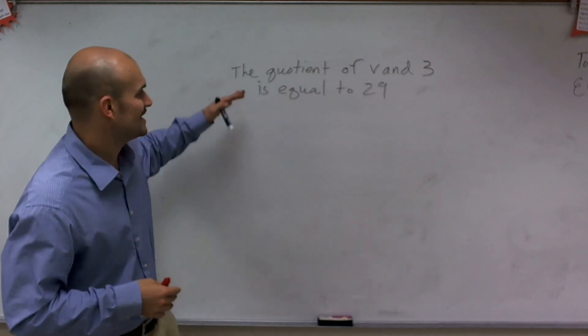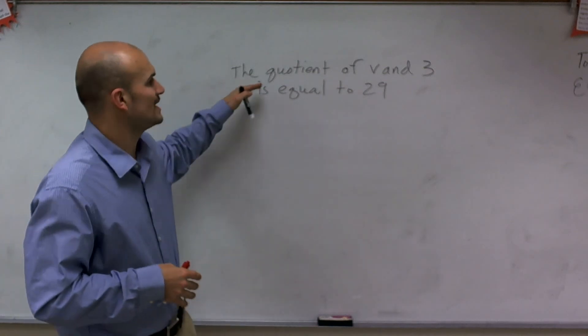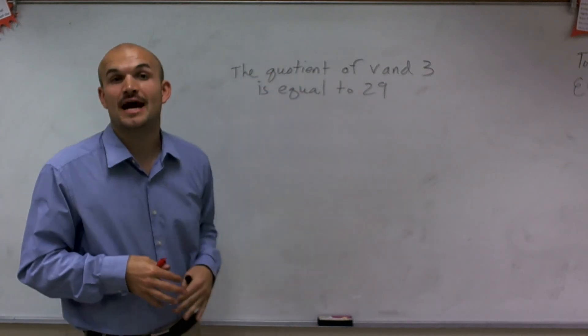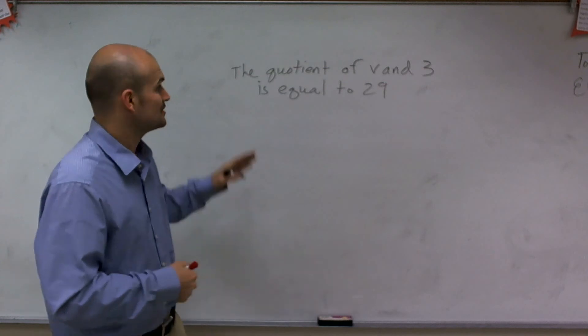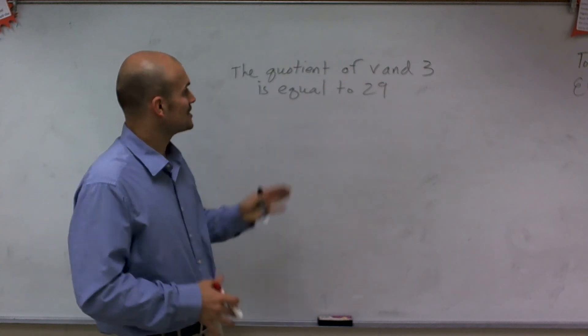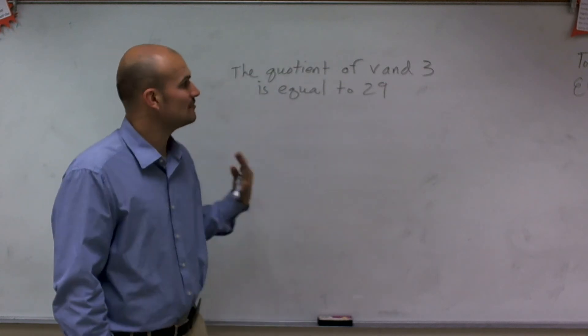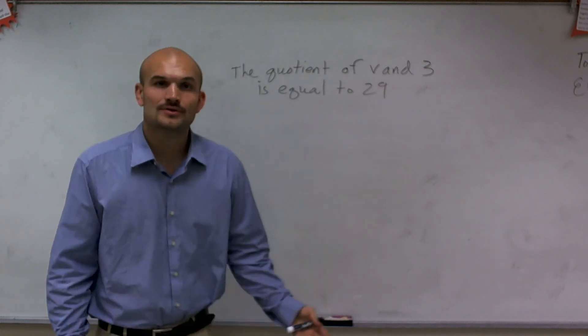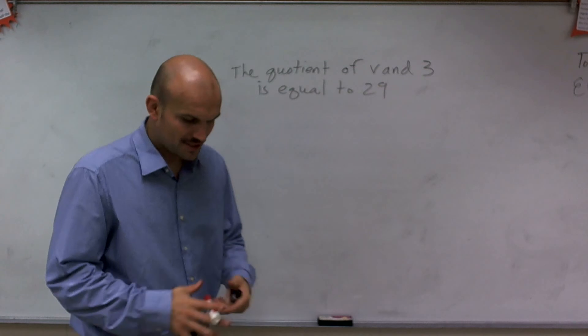Welcome. What I want to show you today is how to write a verbal expression into an algebraic expression. So my verbal expression is: the quotient of V and 3 is equal to 29.